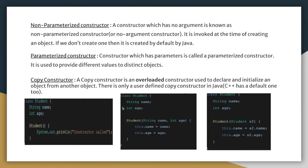Types of constructors: the first is non-parameterized constructors — constructors that have no arguments. As you can see, for a student class a constructor is created where we are not passing any parameters. When the student object is created, this constructor will automatically run and print the output.